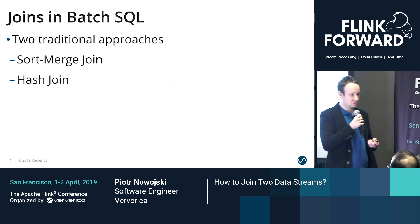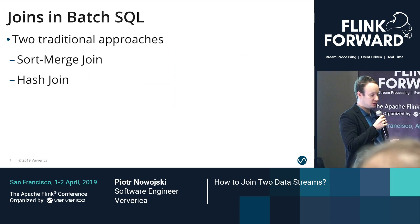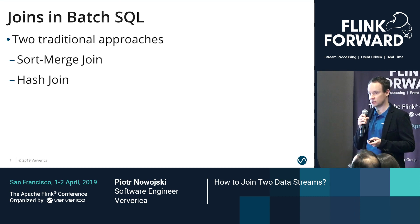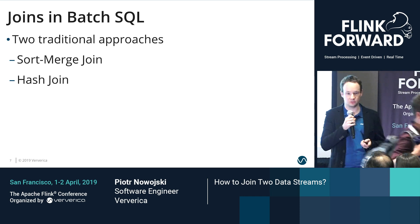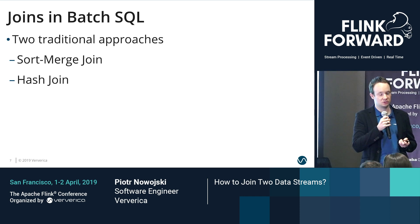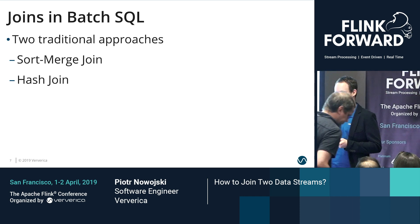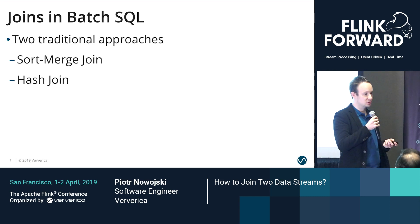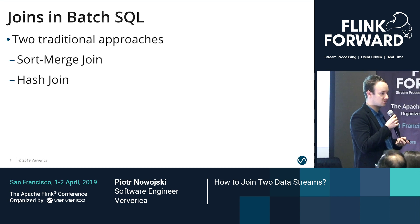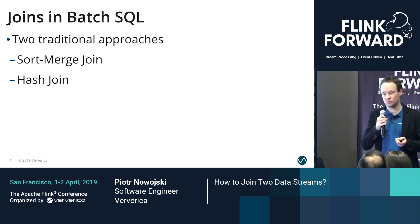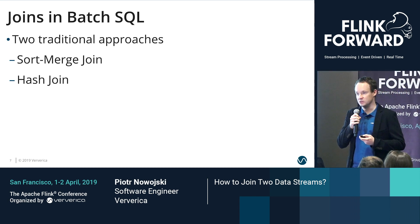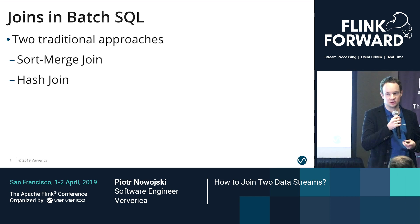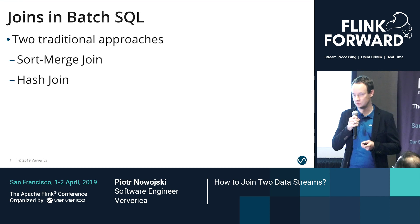Traditionally, such joins are executed by one of two algorithms: sort merge join or hash join, or a variation of those two. Sort merge join works in two steps. In the first phase, we gather all of the data from both tables, then we sort those tables using the join condition. Once sorted, we perform the second phase — iterating over both simultaneously, and whenever we find a join match, we output something in the result.